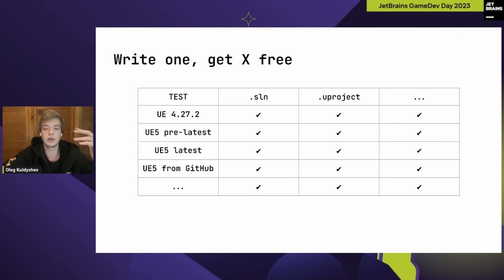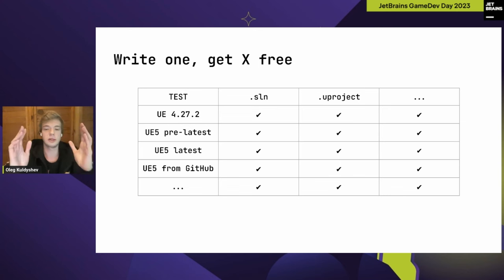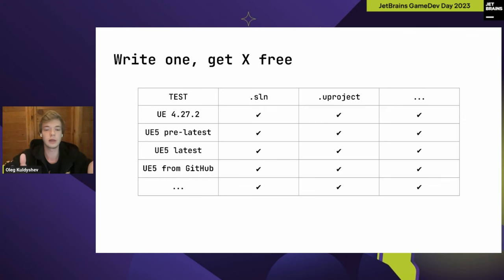We typically use four Unreal Engine versions: the latest UE4, the pre-latest UE5, the latest UE5, and a UE5 version taken from GitHub where we test the ue5-main branch using preview versions. Regardless of how many project models or UE versions we have, the tests will still work — that's why I named this 'write one, get X free.' There's no fixed number of test runs; it depends only on the environment and the filters set by the test.